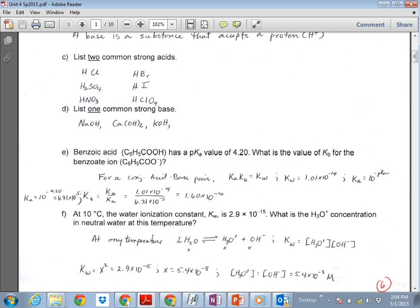Because it's ionizing, okay? And so Kw, we know, is the product of the molar concentration of these two things. So with a lower Kw, okay, basically we just need to take the square root of 2.9 times 10 to the negative 15. And so the molar concentration is 5.4 times 10 to the minus 8.